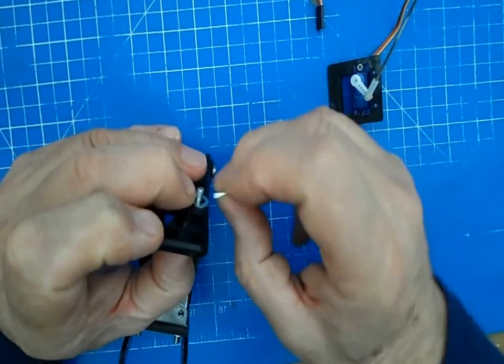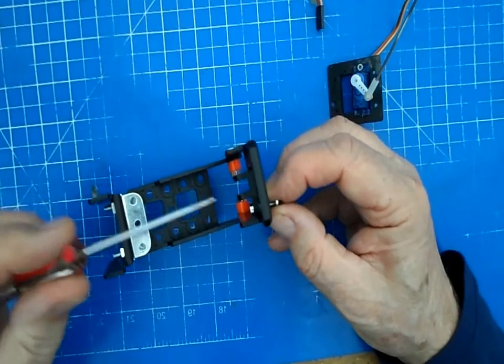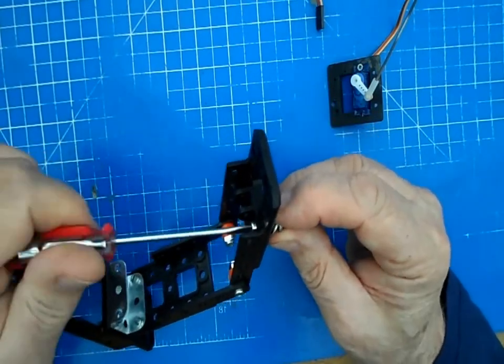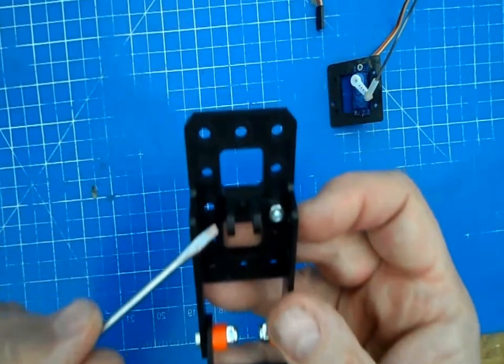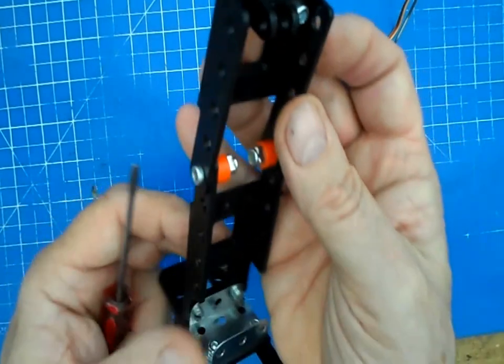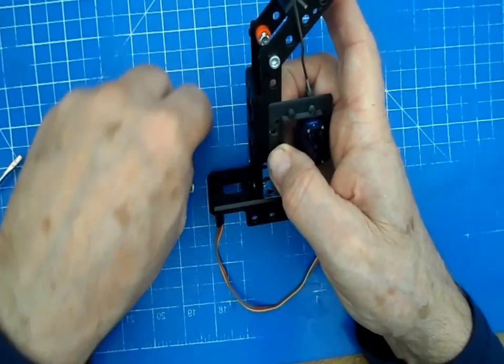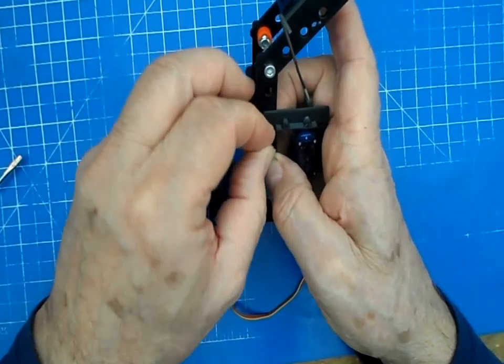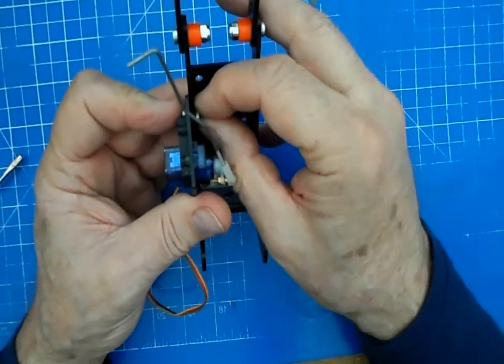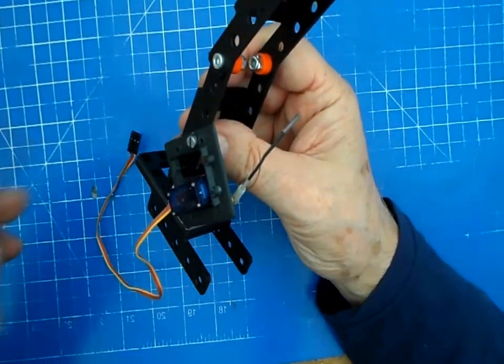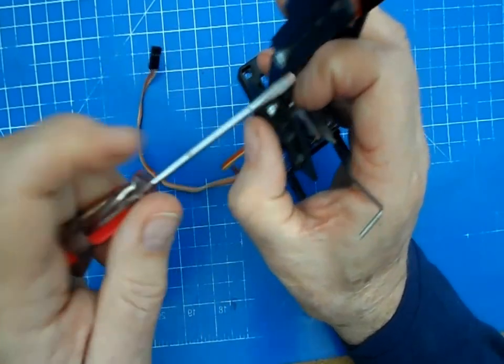I need to use a washer as a spacer because the thread's quite long on this bolt. Right, there's our pivot at the top here and now we'll fix the servo on. And remember this isn't the final construction, this is just basically prototyping just to see if it's going to work, do what you need it to do. You'll probably have to modify it, move it about a bit.